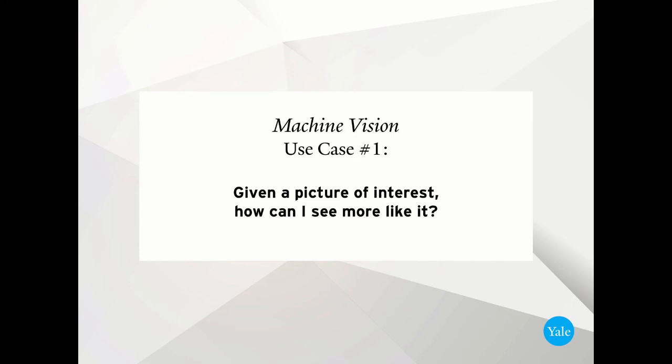We've tried to organize this talk around three easy to understand use cases that get at some of the practical real world things that machine vision might be able to do for those of us in the library field. The first of these use cases is: given a picture of interest, how can I see more things that are like it?